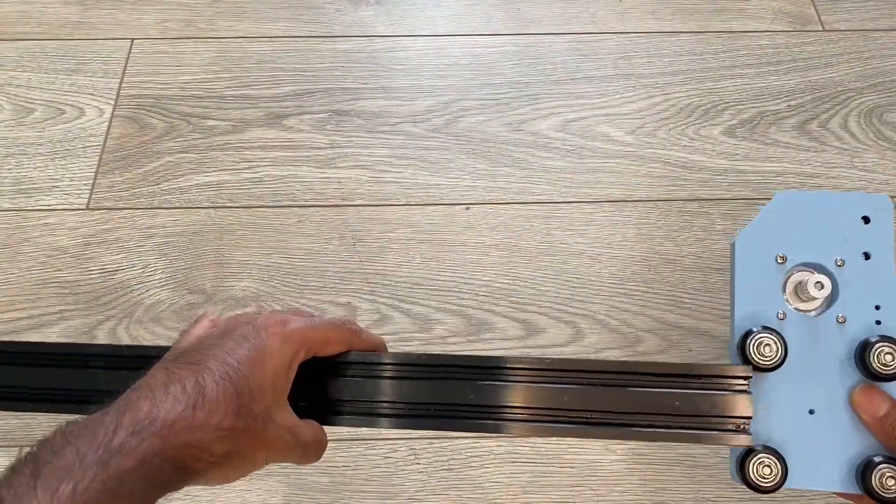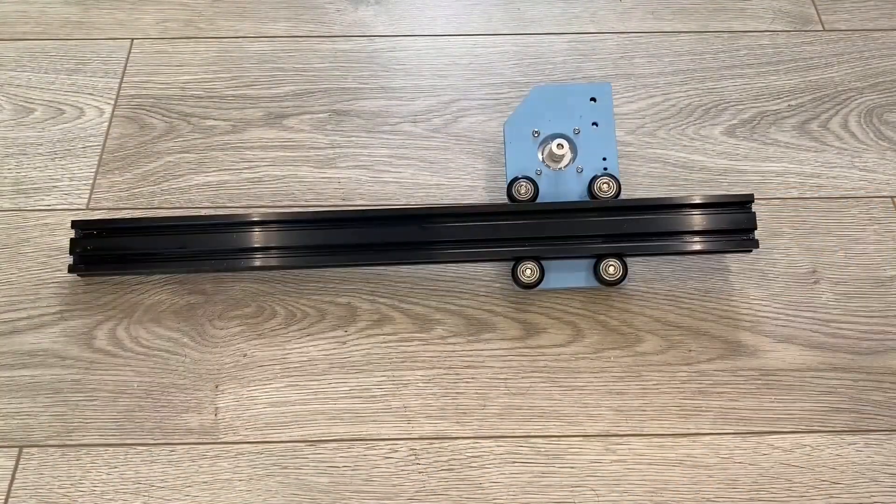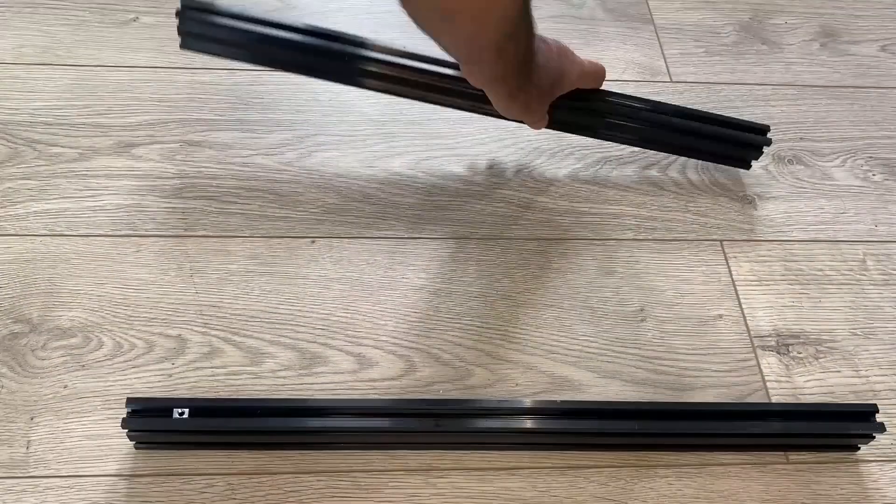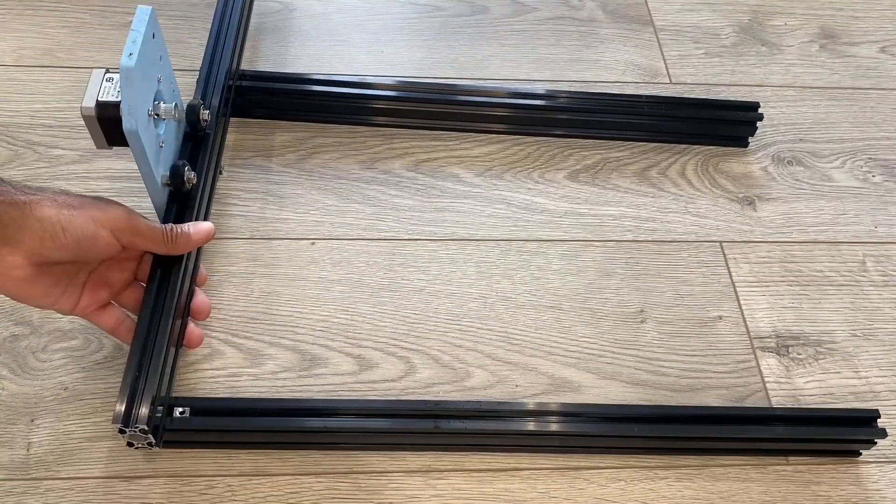Frame assembly came next. This is the two Y-axes with the plates that were assembled previously, and the whole thing held together using standard aluminum brackets.